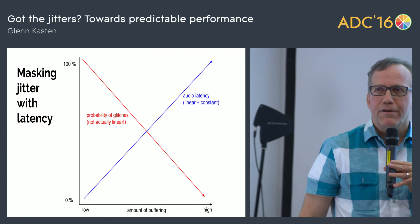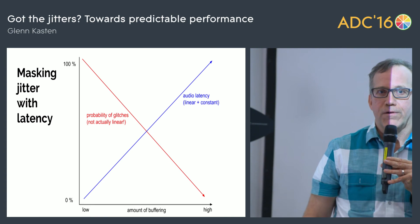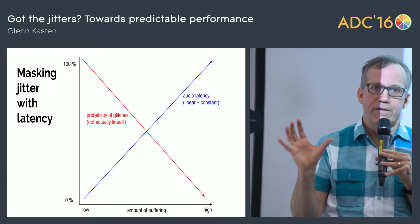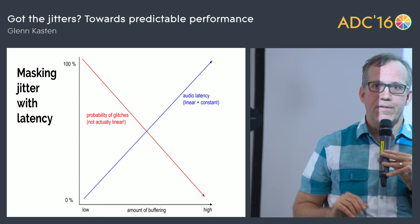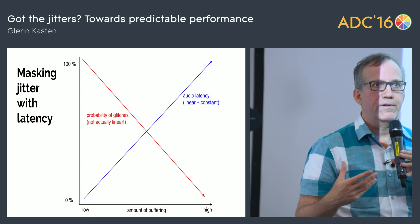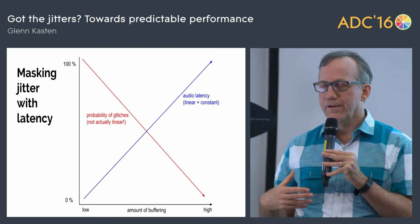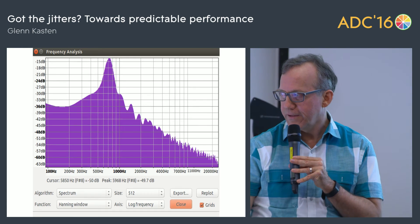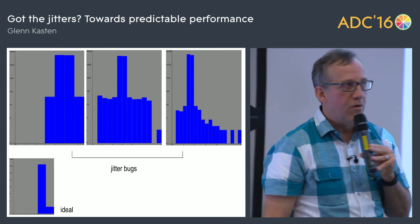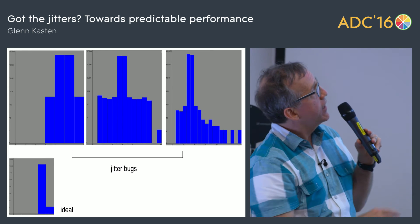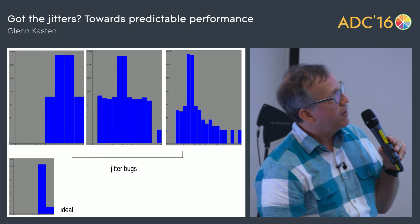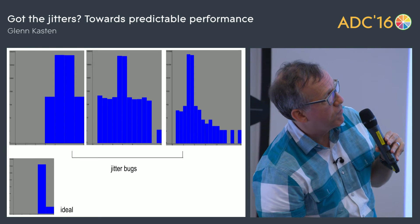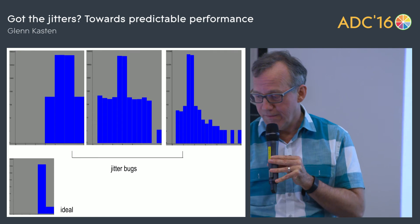How do we correct for that? The easiest way is to increase latency. By making your buffers bigger, you can hide the jitter occurring on task wake-ups, which decreases the probability of glitches. But to get glitches down to zero, you have to add quite a bit of latency. For example, on the best histogram you don't need to increase latency at all, but on the worst one you would have to increase latency by perhaps an extra 10 milliseconds to cover those jitters.